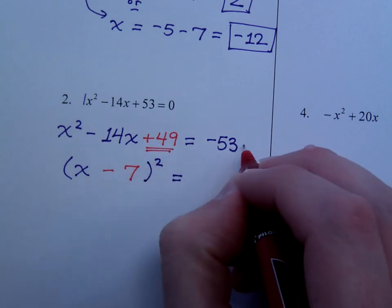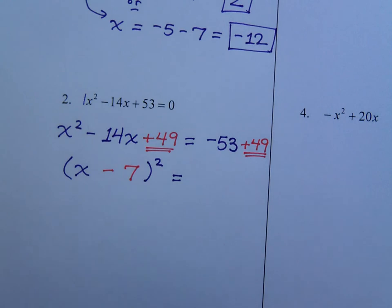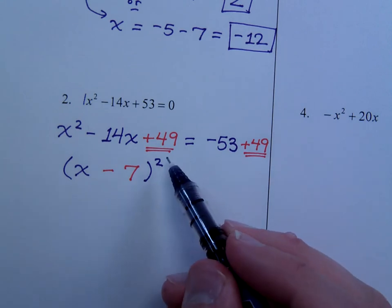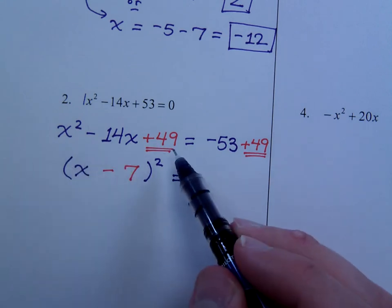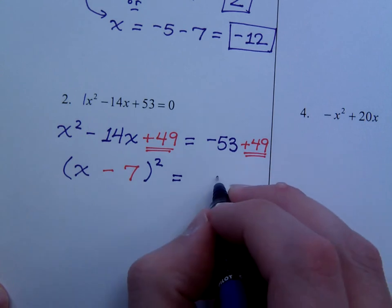Now, what I do to one side, I do to the other side. So, 49 is the number that completes this guy and allows him to factor as the same factor, squared. On the right side, you just do the math. So, this is negative 4.